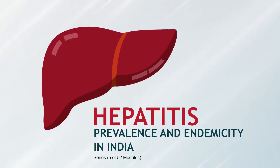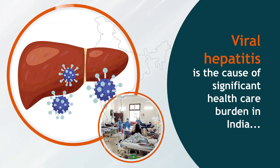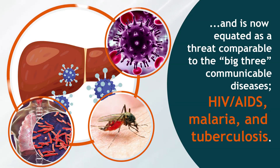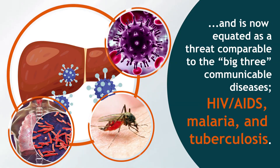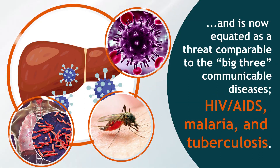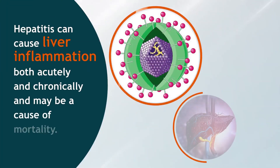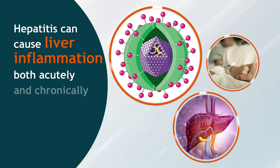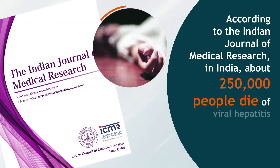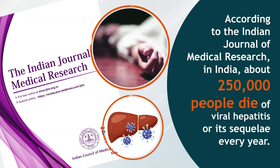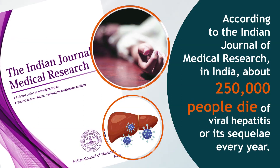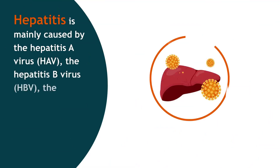Hepatitis prevalence and endemicity in India — introduction. Viral hepatitis is the cause of significant healthcare burden in India and is now equated as a threat comparable to the big three communicable diseases: HIV/AIDS, malaria, and tuberculosis. Hepatitis can cause liver inflammation both acutely and chronically and may be a cause of mortality. According to the Indian Journal of Medical Research, about 250,000 people die of viral hepatitis or its sequelae every year in India.